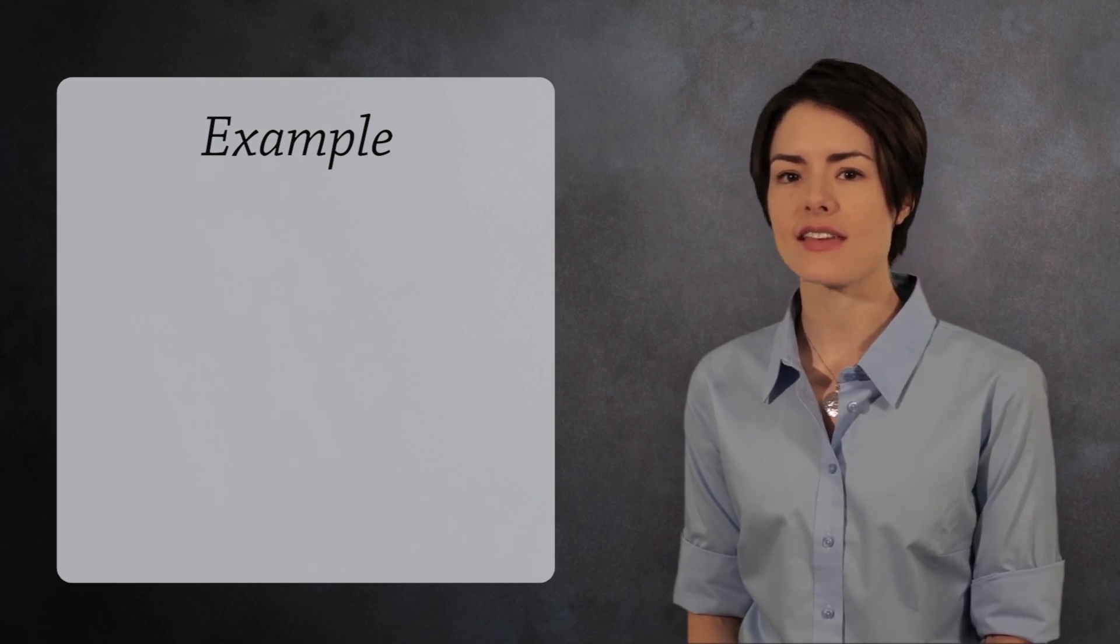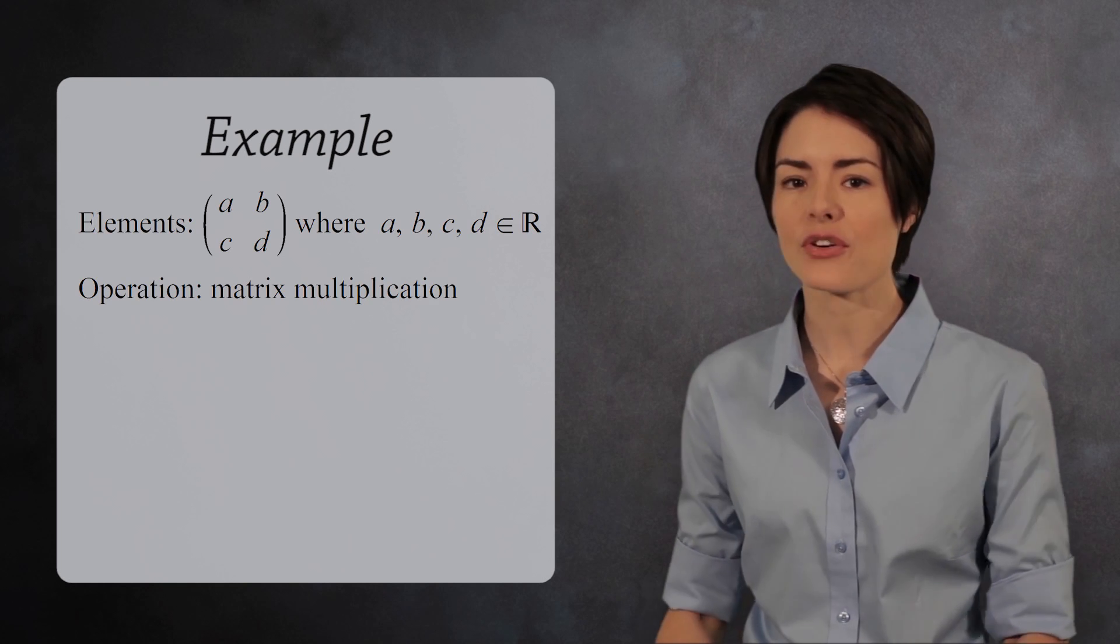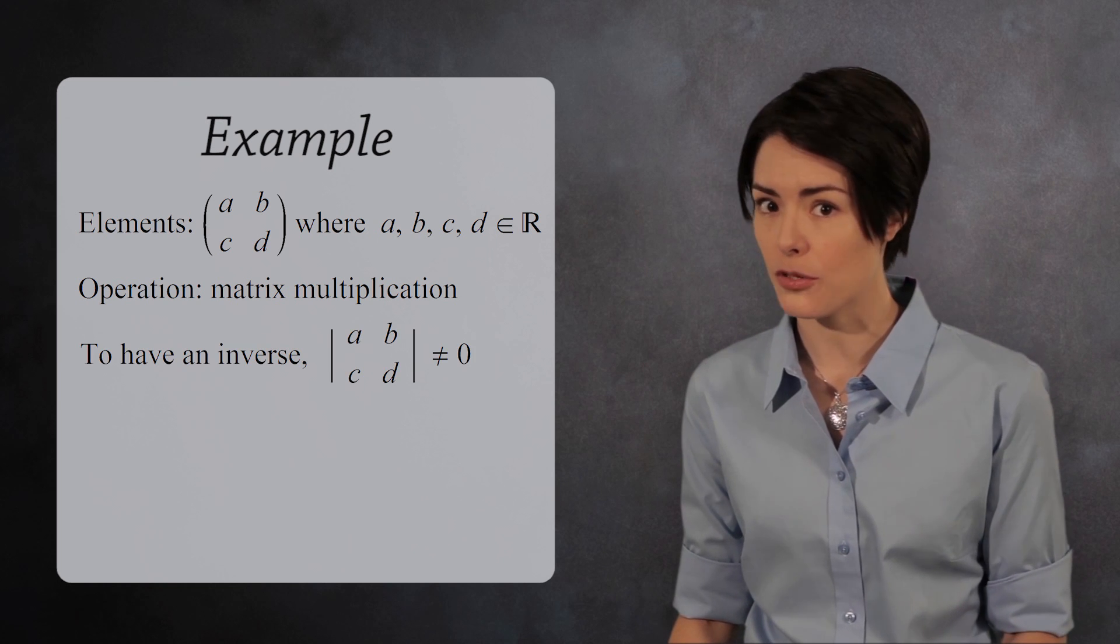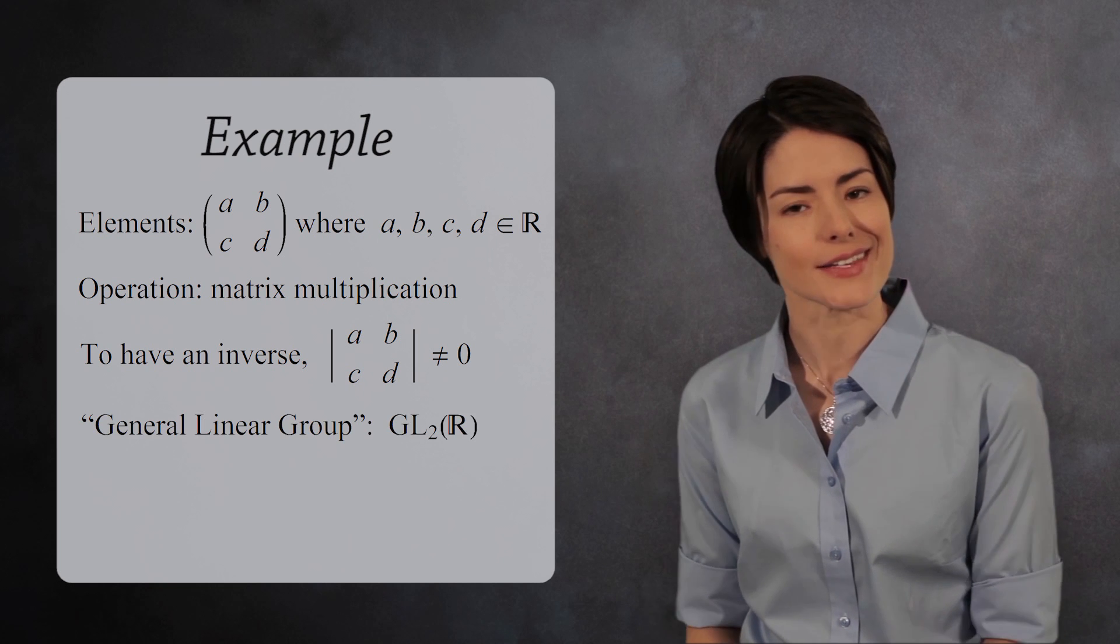For our last example, consider the real 2 by 2 matrices under matrix multiplication. For a 2 by 2 real matrix to have an inverse, it must have a non-zero determinant. The group of such matrices is called the general linear group, and we write it like this.